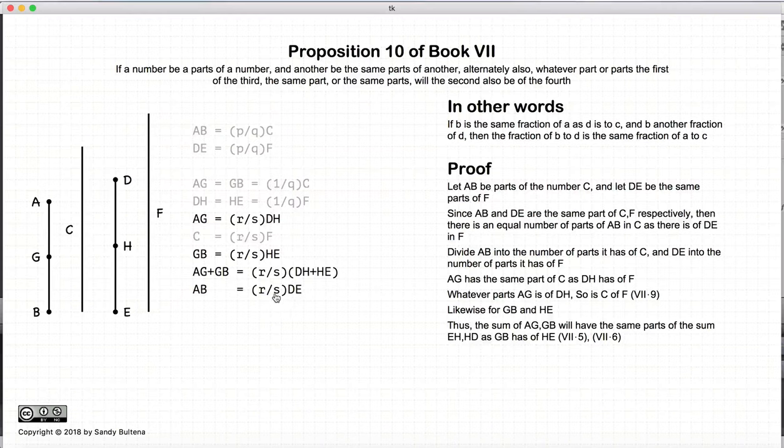So we have AB is the same fractions of DE as AG is of DH and GB is of HE.